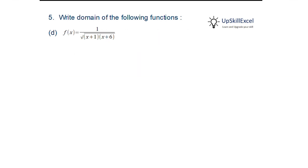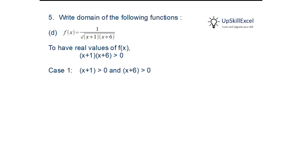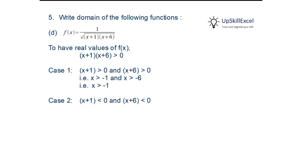Write the domain of f(x) = 1/√((x+1)(x+6)). For f(x) to have real values, (x+1)(x+6) must be greater than 0. This is possible in two scenarios: first, when both (x+1) and (x+6) are greater than 0, giving x > −1 and x > −6 — the AND condition is satisfied only when x > −1. Second, when both are less than 0, giving x < −1 and x < −6 — satisfied only when x < −6. So the domain is x > −1 or x < −6.